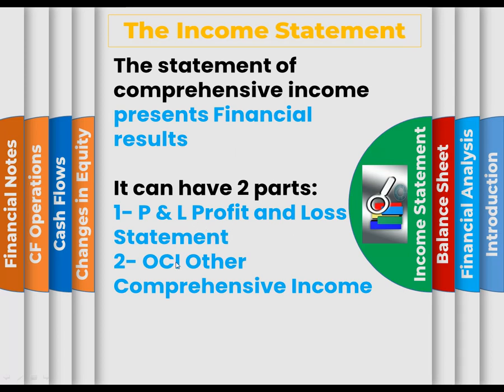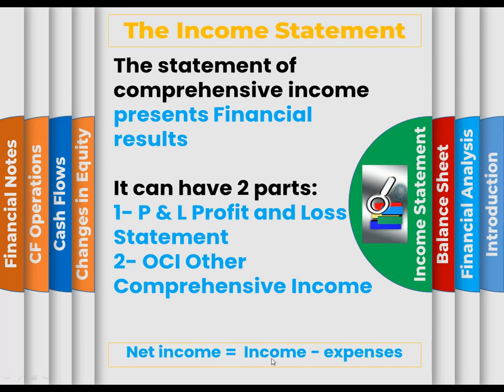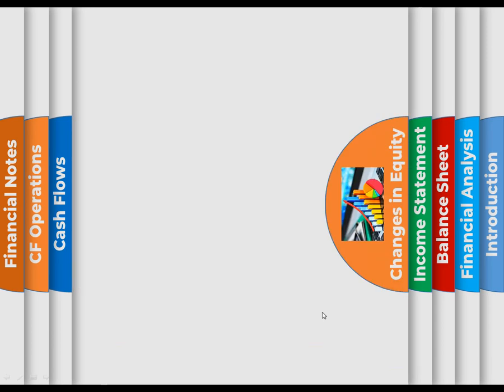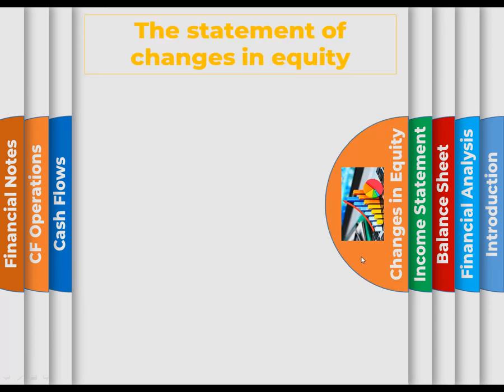The income statement, also known as the statement of comprehensive income, presents financial results. It can have P&L (profit and loss statement) and OCI (other comprehensive income). The equation is: Net Income equals Income minus Expenses.